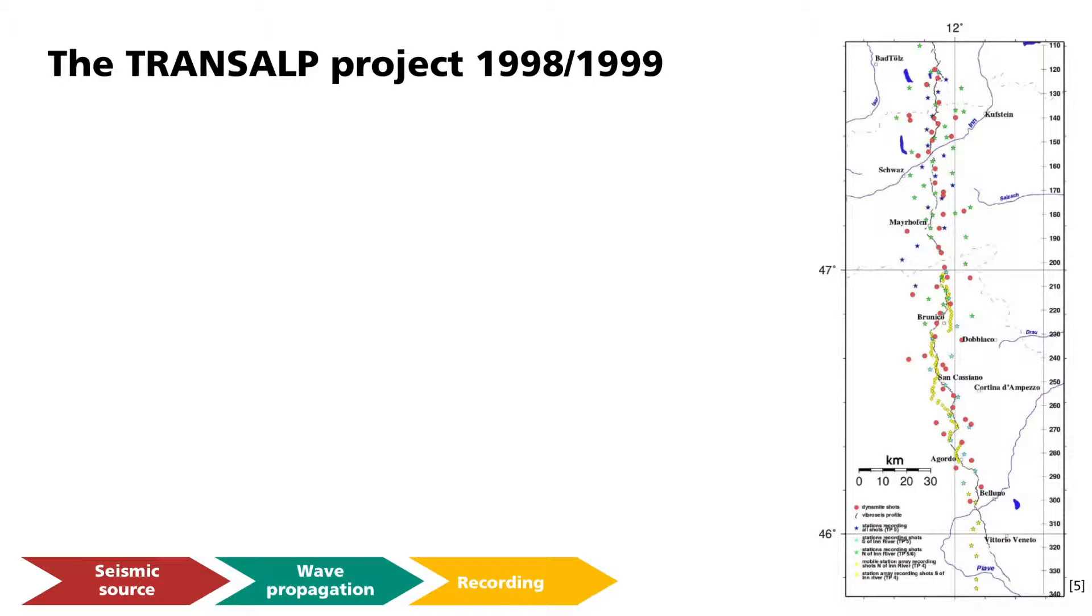For the investigation of the subsurface structure of the Alps, up to 53 component seismometers were used to record the data in the Alps. The instruments were placed at intervals of approximately 5 to 10 kilometers across the Eastern Alps. On the map, these are marked with green, blue and yellow stars. For the TransAlp project, both explosions as well as vibroseis sources were used to produce seismic waves, depicted here as red dots.